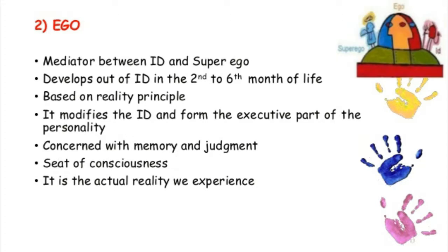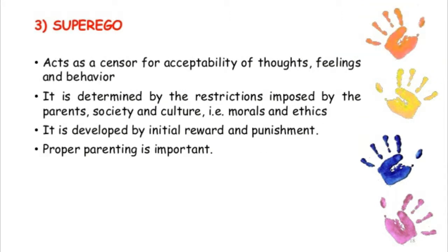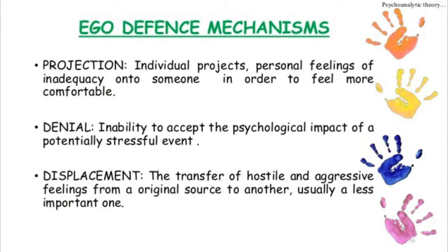Next is the ego. It is the mediator between id and superego. Unlike id, ego is governed by the reality principle. It is concerned with memories and judgment. It is developed after birth, expands with age, and it delays, modifies, and controls the id impulse on a realistic level. Next is the superego. It is the prohibition learned from the environment, more from parents and authorities. There are also a few ego defense mechanisms.